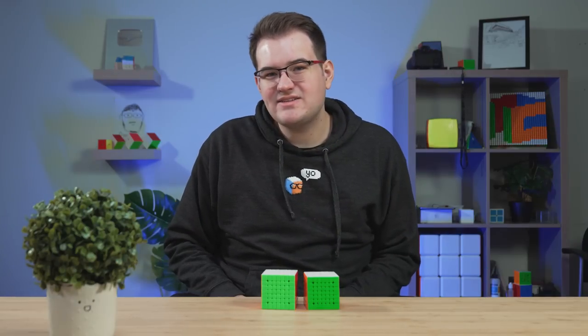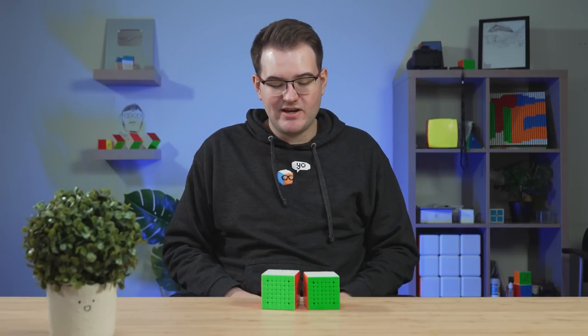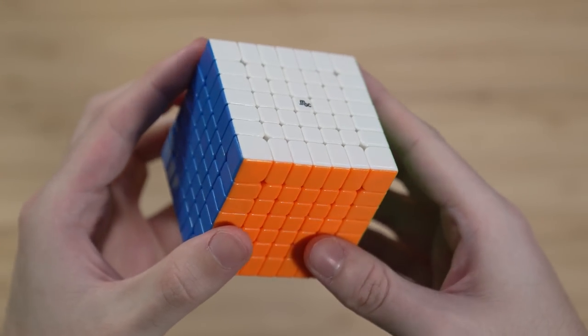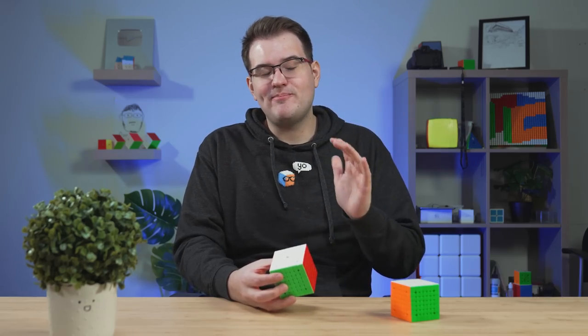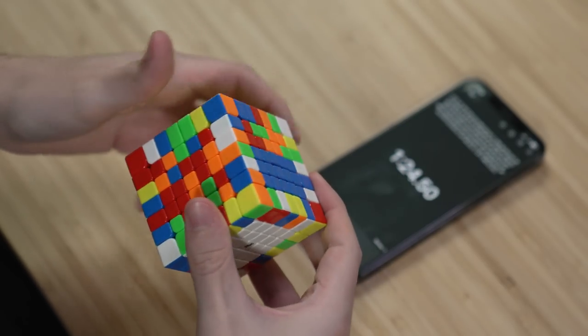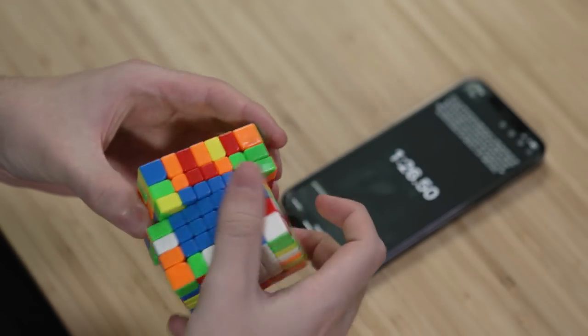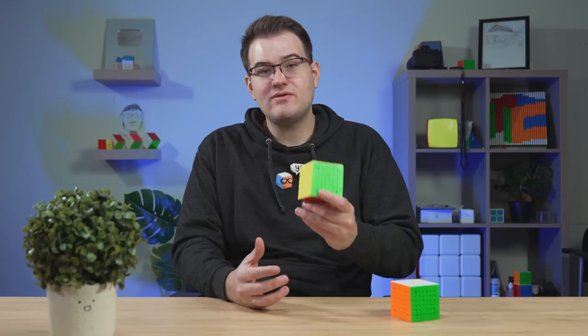Hey guys, I'm back to talk about big cubes. So let's go ahead and start with 7x7 here. Our first pick is going to be the MGC 7x7. So this is the same from last year. And it's also still by far the best budget 7x7. It's extremely quick, very reliable. It's very stable. It really just checks off pretty much a lot of the boxes that you'd want for a 7x7 while also maintaining that really, really great price. However,